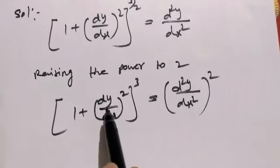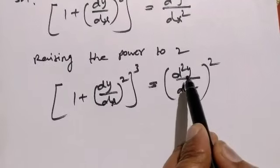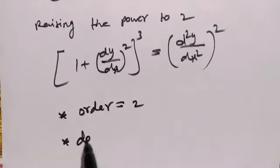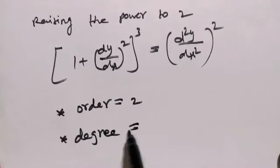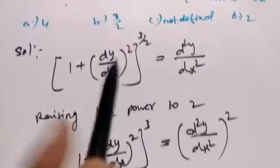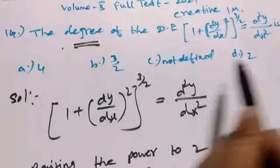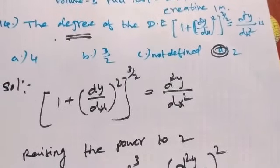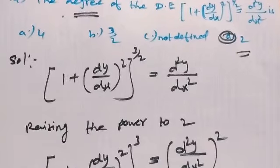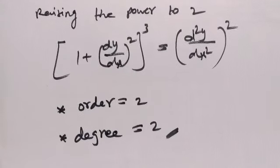So the highest order derivative is 2, and the highest degree is also 2. So the first consideration gives degree equal to 2, so the degree of the differential equation is 2. Therefore, the degree is equal to 2. Thanks for watching and enjoy!